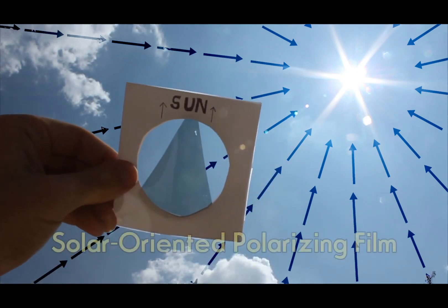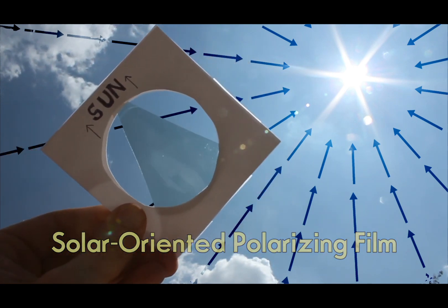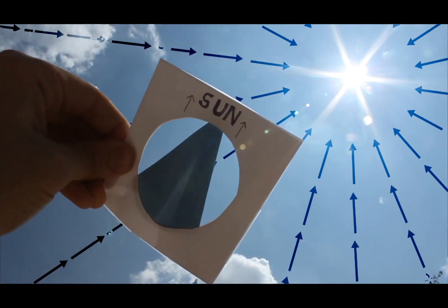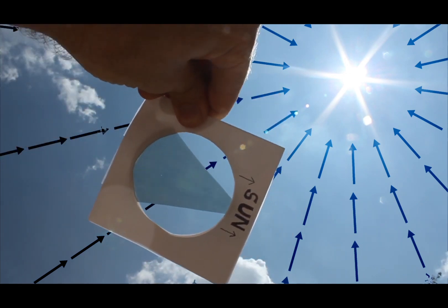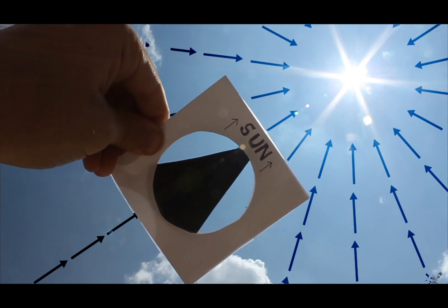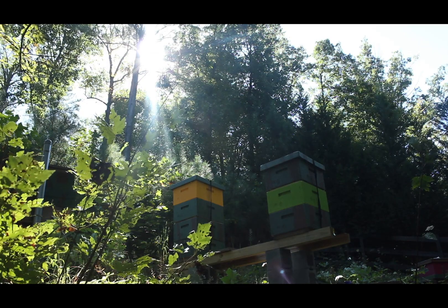Devices like polarized film, sunglasses or honey bee eyes can detect this orientation and determine the position of the sun even while looking in the opposite direction. This gives the bees a type of solar compass, allowing them to always know the precise position of the sun in the sky. In addition to this solar compass, bees possess a finely tuned internal clock.